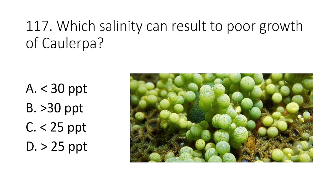Question 117. Which salinity can result in poor growth of Caulerpa? A. Lesser than 30 PPT B. Greater than 30 PPT C. Lesser than 25 PPT D. Greater than 25 PPT. The answer is A. Lesser than 30 parts per thousand.